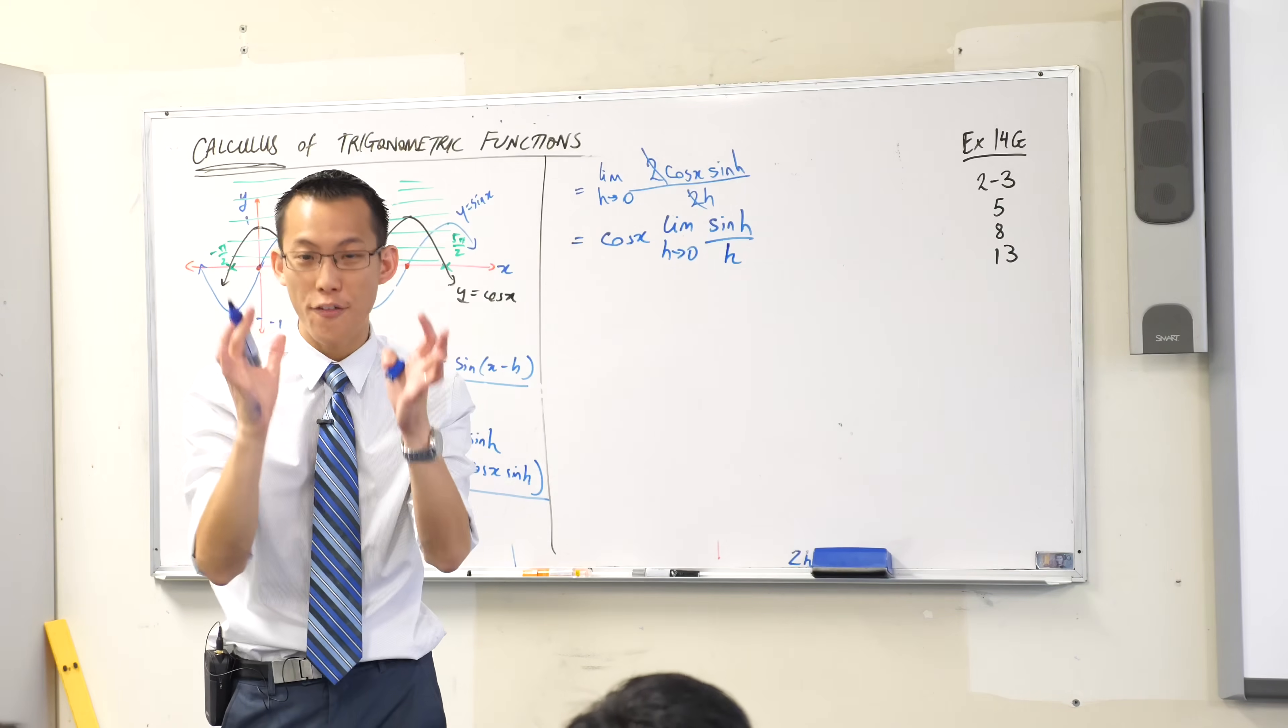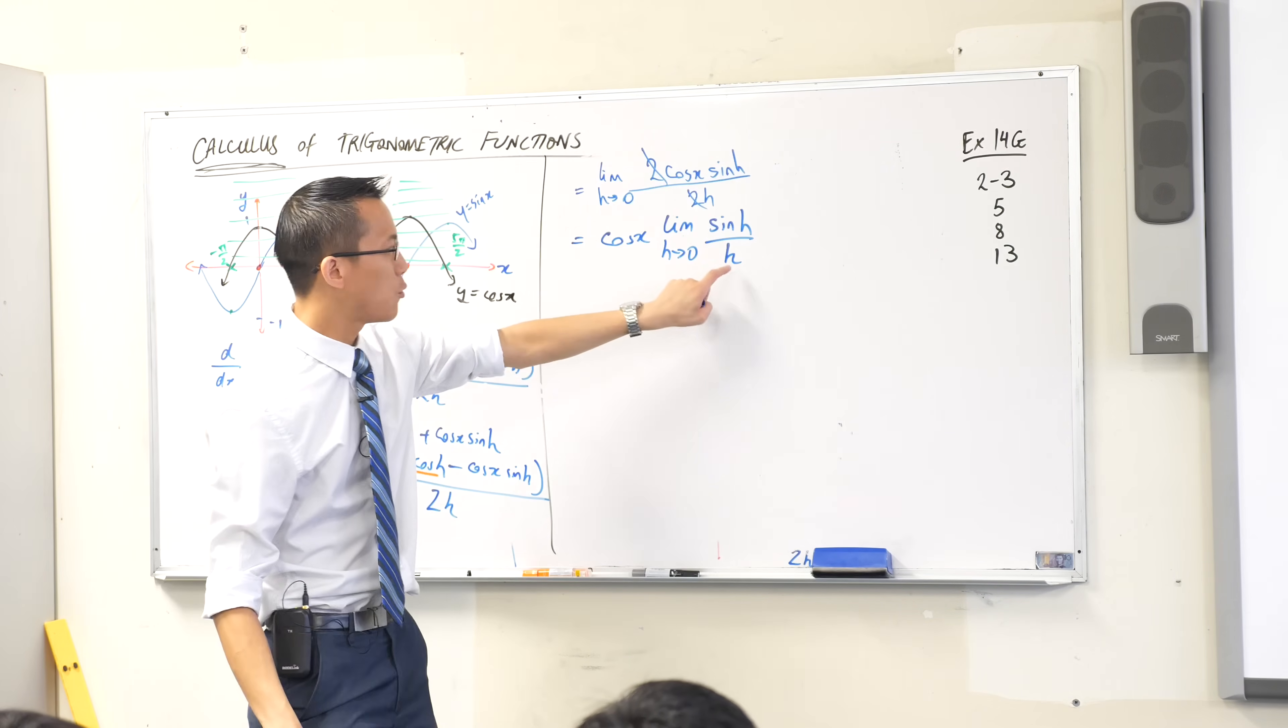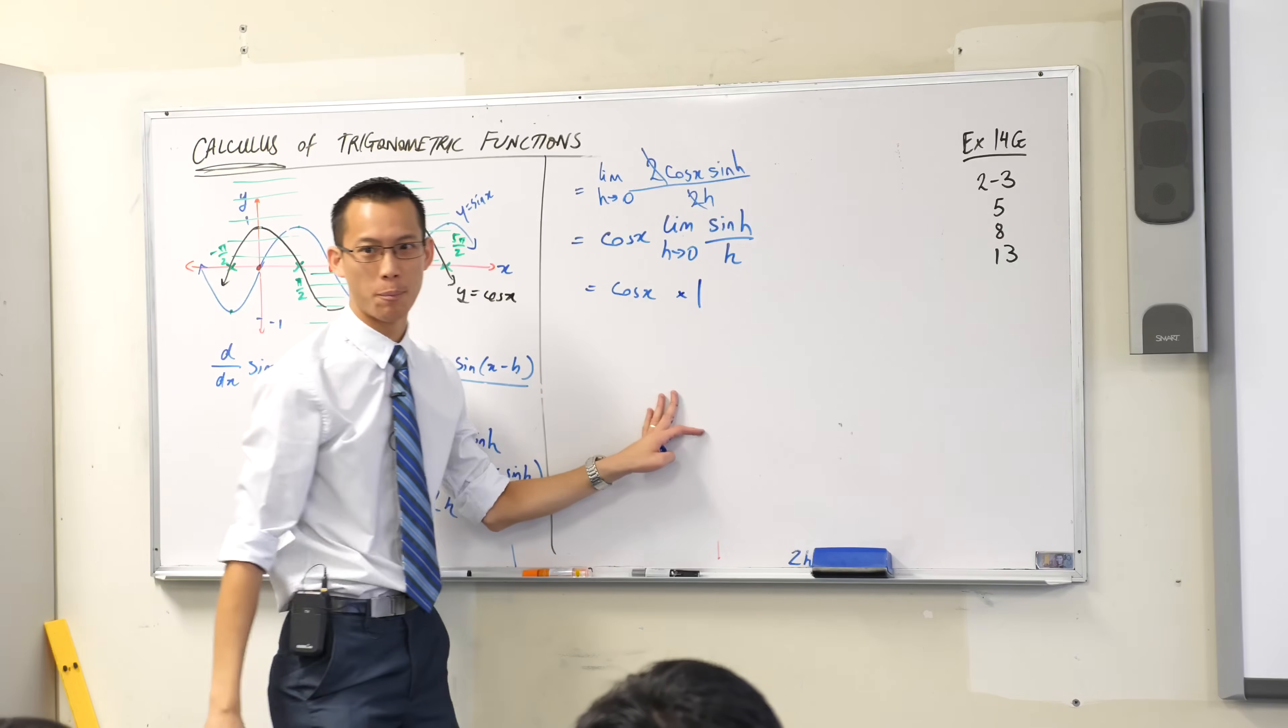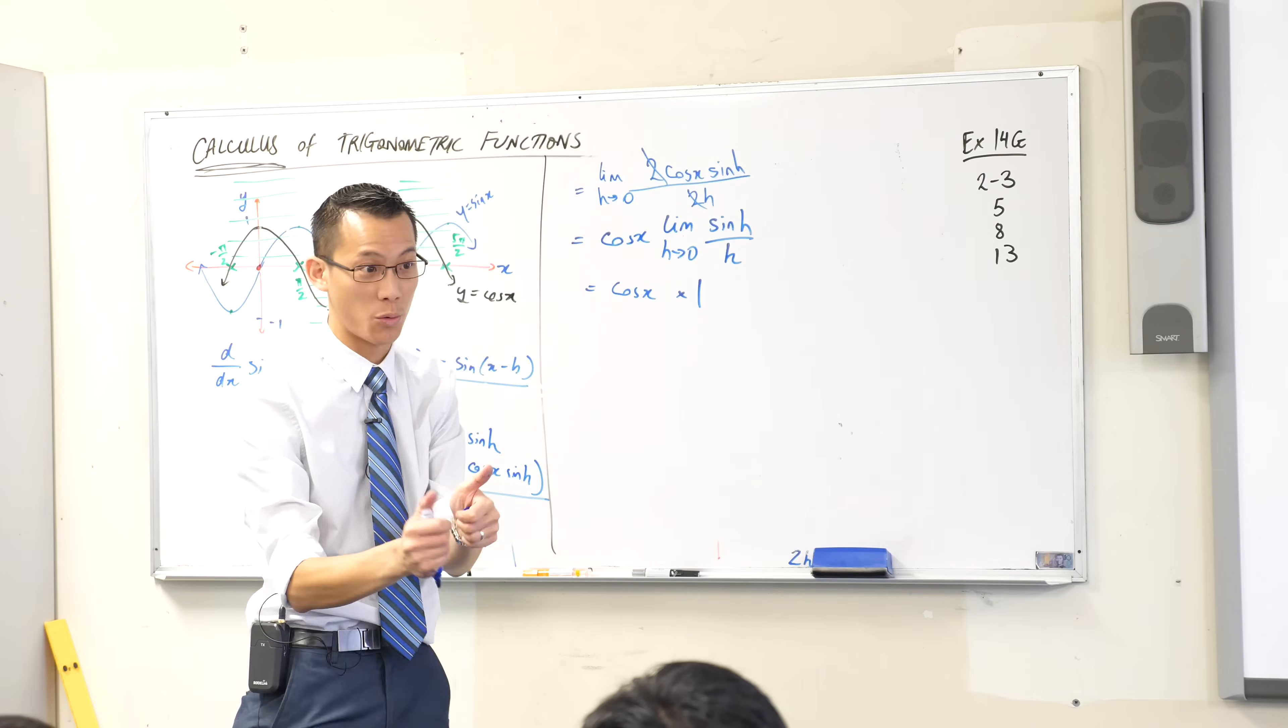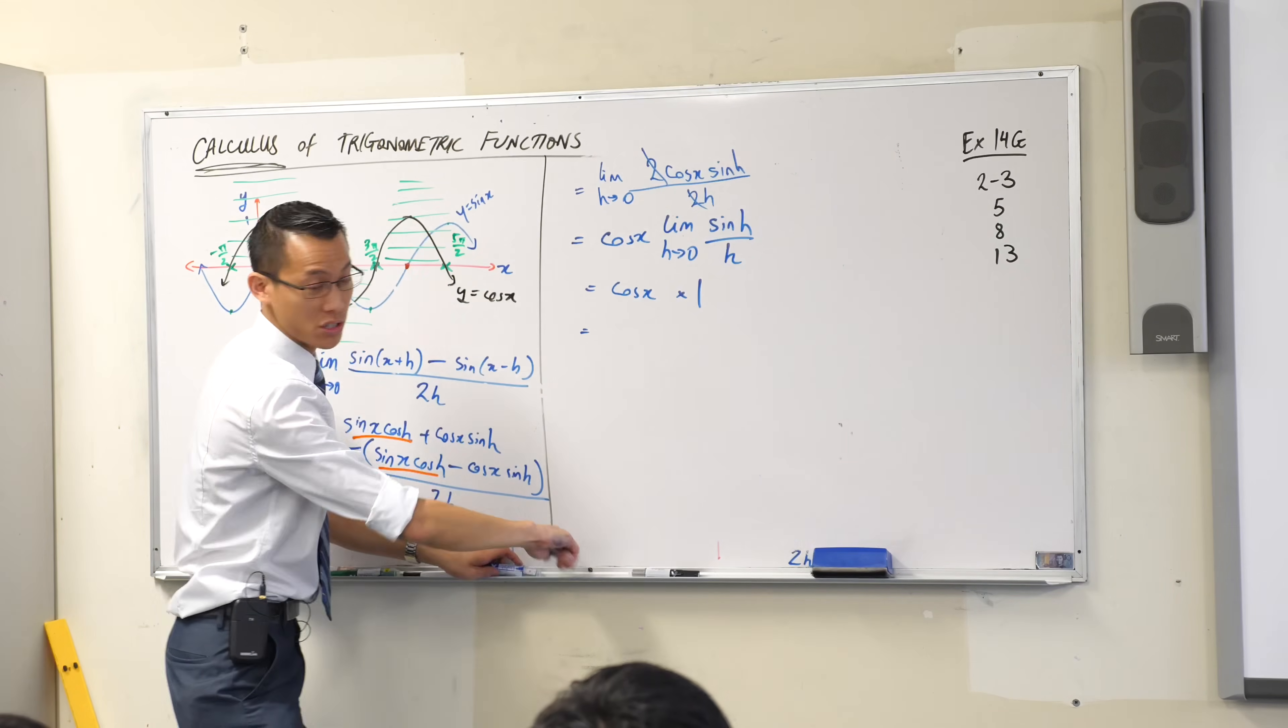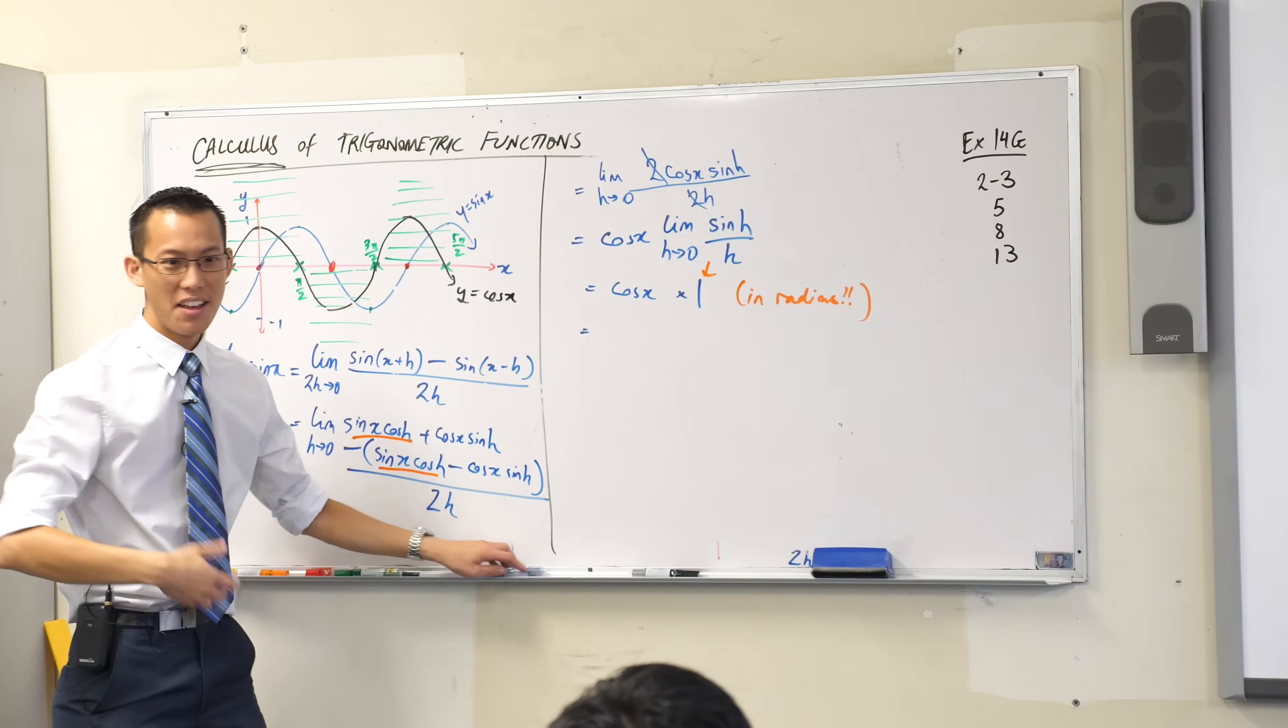Now, do you remember we did that first graph underneath this heading and I said you must draw this in radians. Don't think about it in degrees. Why? What can I do with this if I'm in radians? In radians and radians only, that's one. If it's in degrees and your calculator is in degrees mode, you will not go to one. You'll go to some weird thing, 180 on pi or something like that. But in radians, that limit is one.